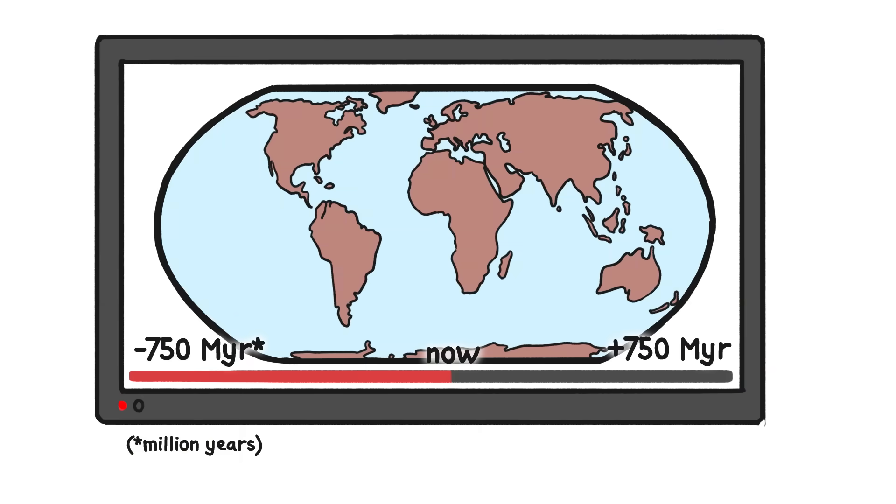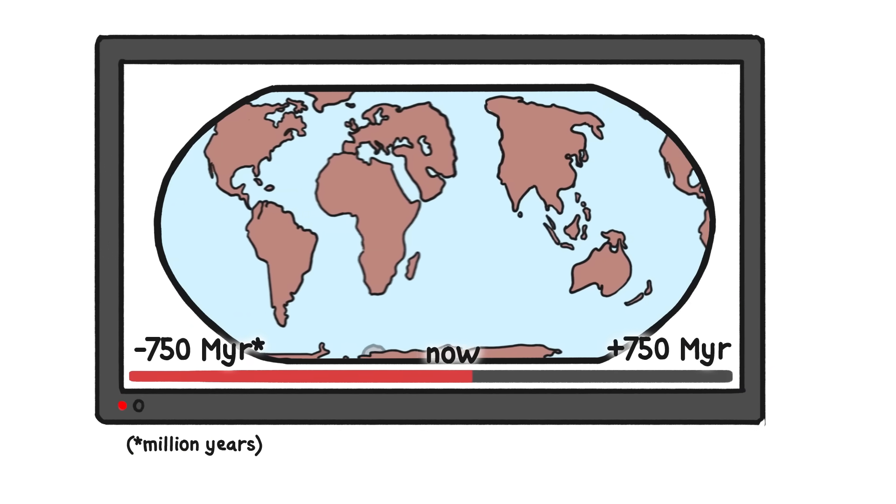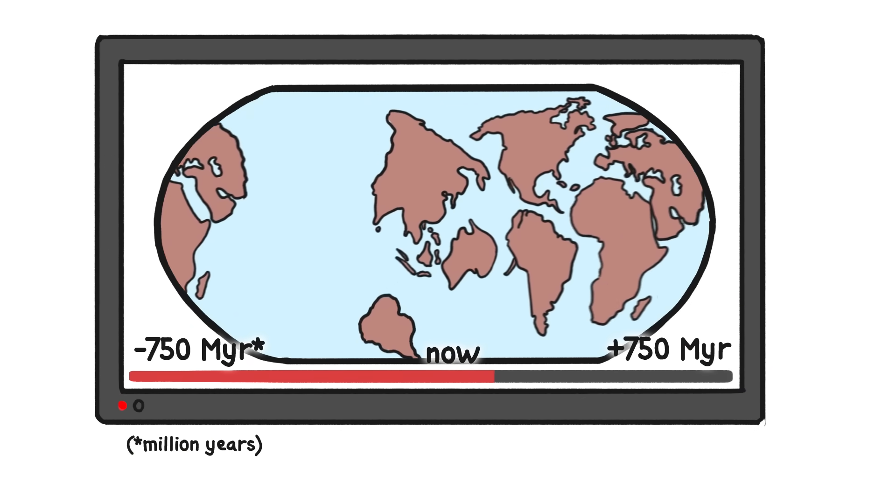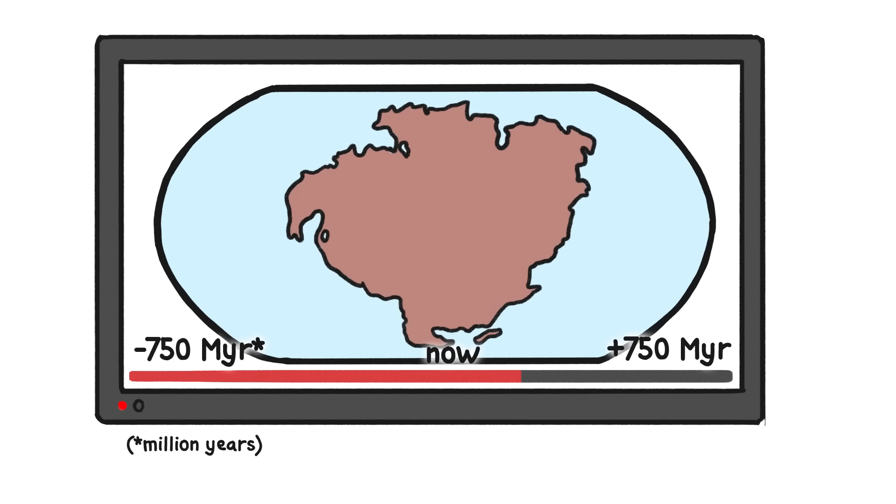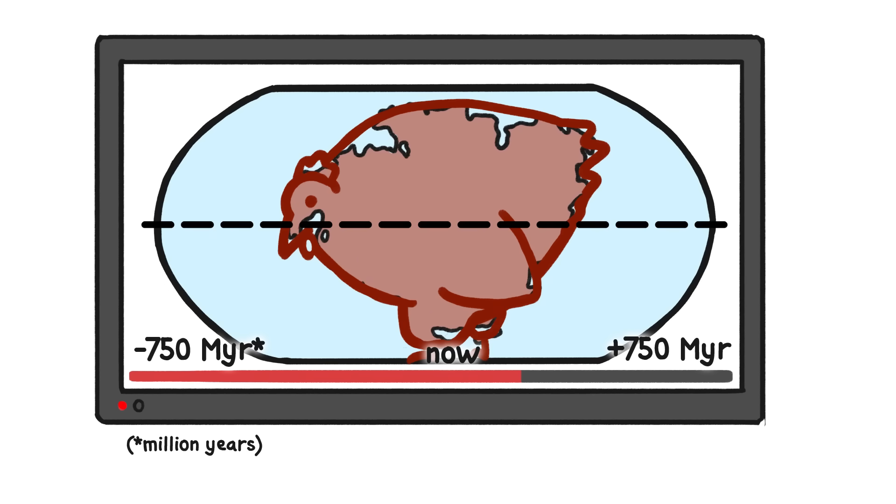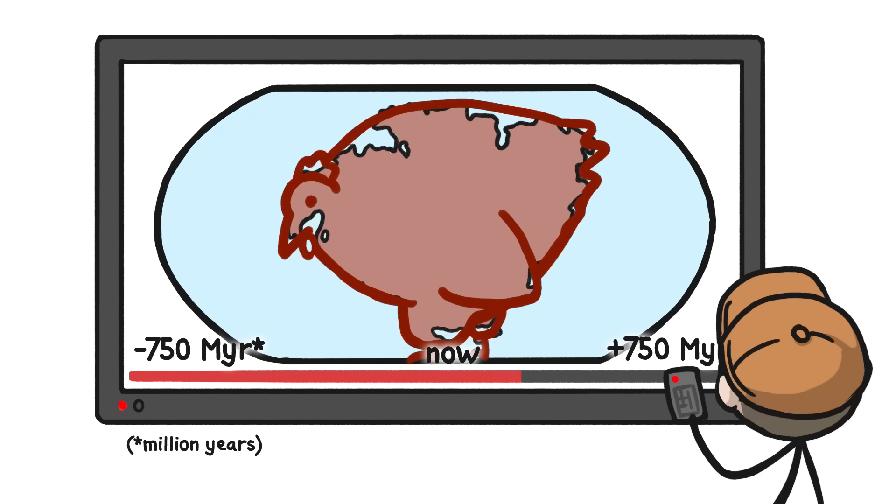But this configuration won't last. The movie will go on. One recent model projects that, over the next 200 million years or so, the continental plates will once again smush together to form a supercontinent, this time one that's shaped sort of like an overweight chicken and is roughly half above and half below the equator. At least for the moment.